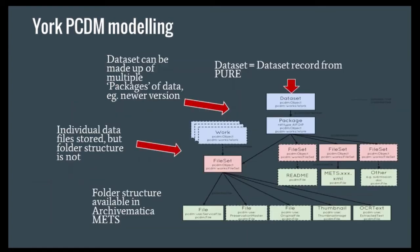One piece of work associated with York was modeling how to hold datasets once created as a package. They used PCDM — the Portland Common Data Model — an approach to modeling digital content that originated in discussions within the Hydra community but has been picked up more broadly by the Fedora community and others. JISC is also interested in using it for some of its research data activity in the UK. It's about identifying the dataset and associating the different pieces of metadata around it so that it becomes one coherent object when managed within the repository after being pushed through Archivematica.